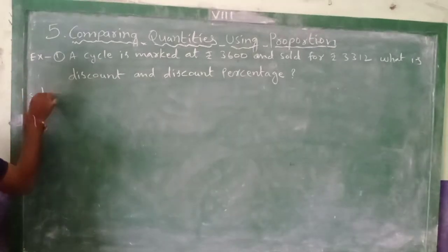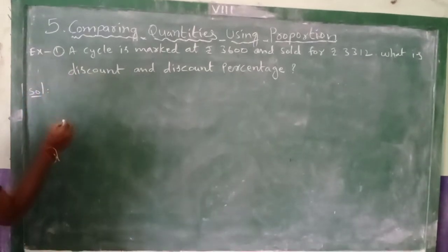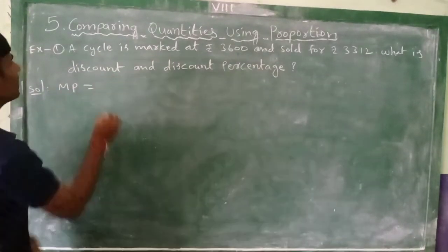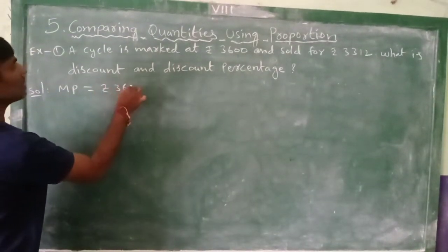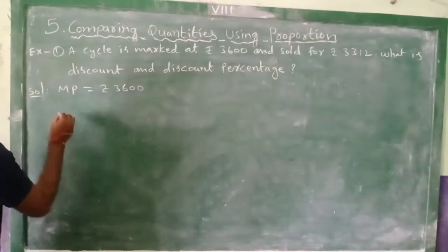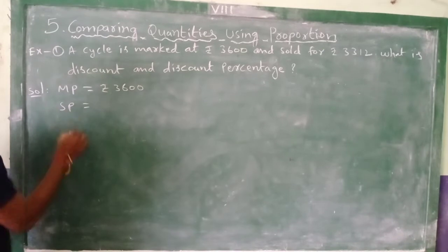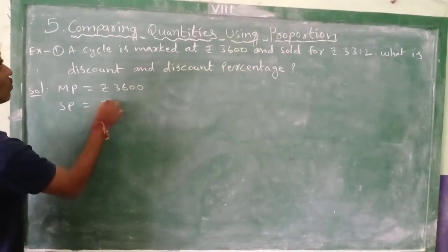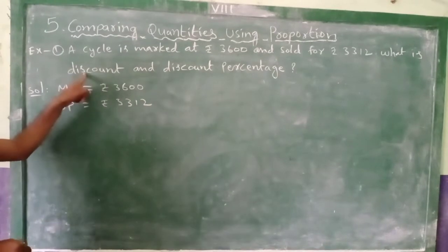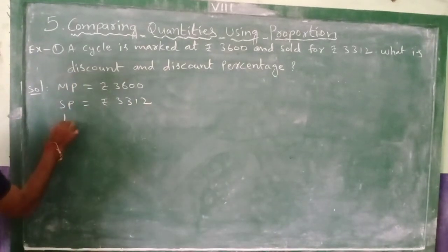Solution: Marked price, MP equal to Rupees 3600. Next, selling price, SP equal to Rupees 3312. Now we have to find the discount.